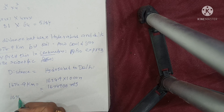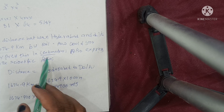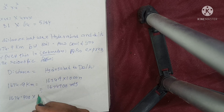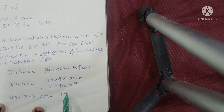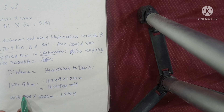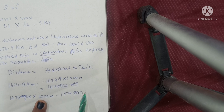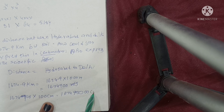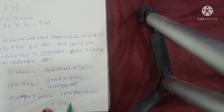Now converting to centimeters: 1,674,900 meters into centimeters — multiply by 100 — gives 1674.9 with these two zeros added. In scientific notation, how do you write this? 1674 into 10 to the power of 4. Simple.